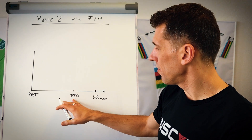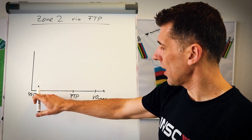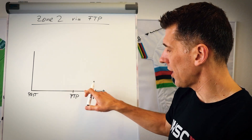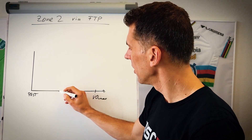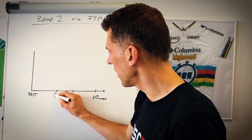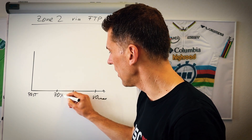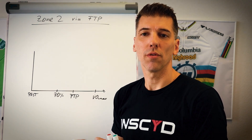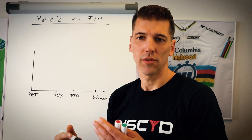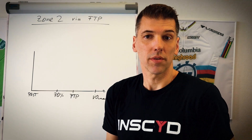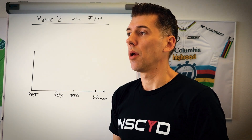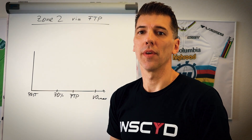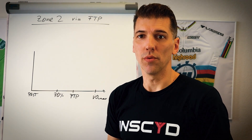Basically what happens is you have your FTP, and if you look at exercise intensity from rest to FTP — maybe to VO2 max — you extrapolate to, let's say, 70% of it, and you call this the intensity you will use for your base zone 2 training. And of course, that's one way to do it.